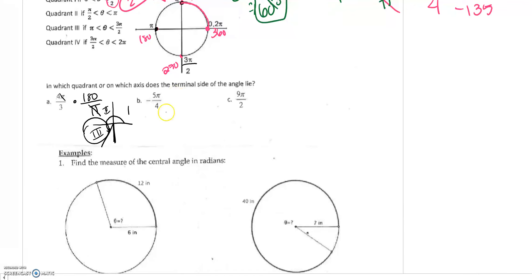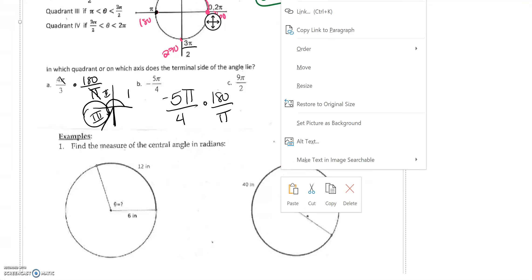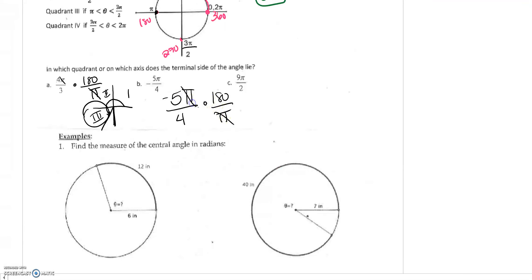Do the same thing for letter B. Negative 5π over 4 times 180 over π. Cross simplify your π's. Negative 5 times 180 divided by 4 is negative 225. Again, be careful now about how you're going, what direction you're going in, because it is negative, which means you have to go 1. So here's 90, 180. This would be 270 degrees and you don't want to hit that. So here's 1 and then 2.